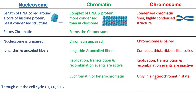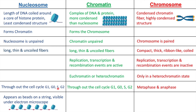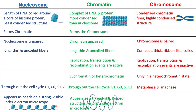Nucleosomes form throughout the cell cycle during interphase: G1, G0, S, and G2. Chromatin is also formed throughout the cell cycle during interphase. Chromosomes are formed during metaphase and anaphase — that is during cell division — whereas nucleosome and chromatin occur during non-dividing cells. Lastly, nucleosomes appear as a beads-on-a-string structure and are visible under the electron microscope. Chromatin appears as a thread-like looped structure, also visible under the electron microscope, whereas chromosomes are a four-arm structure visible under the light microscope.